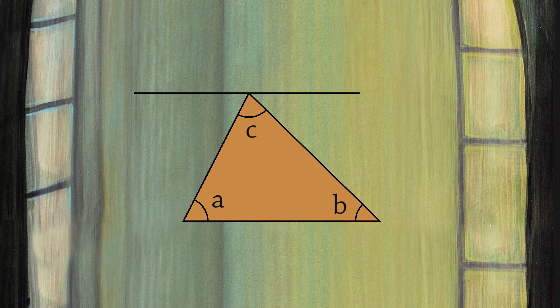Draw a line through the top vertex that is parallel to the base. Next, extend the three sides of the triangle into lines.